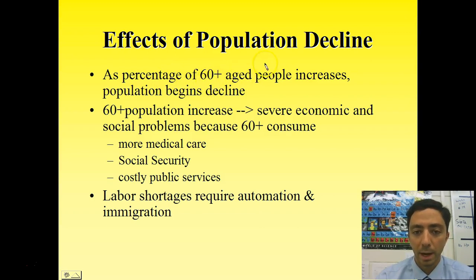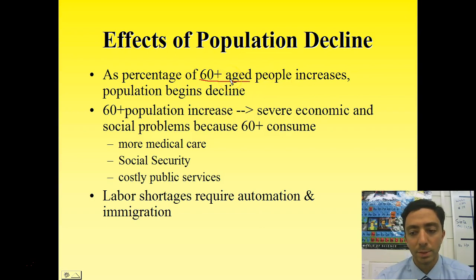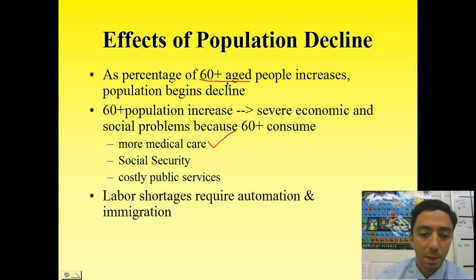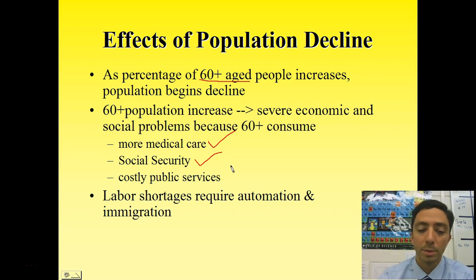As the percentage of 60-plus individuals increases, population begins to decline — these people are no longer able to reproduce. Big problems arise: the 60-plus group has a huge reliance on medical care, especially Medicaid, which is government-supported and funded by tax dollars. Social Security is how many of these people plan to retire, counting on payments they've paid into their entire lives. Costly public services add up on top of that.